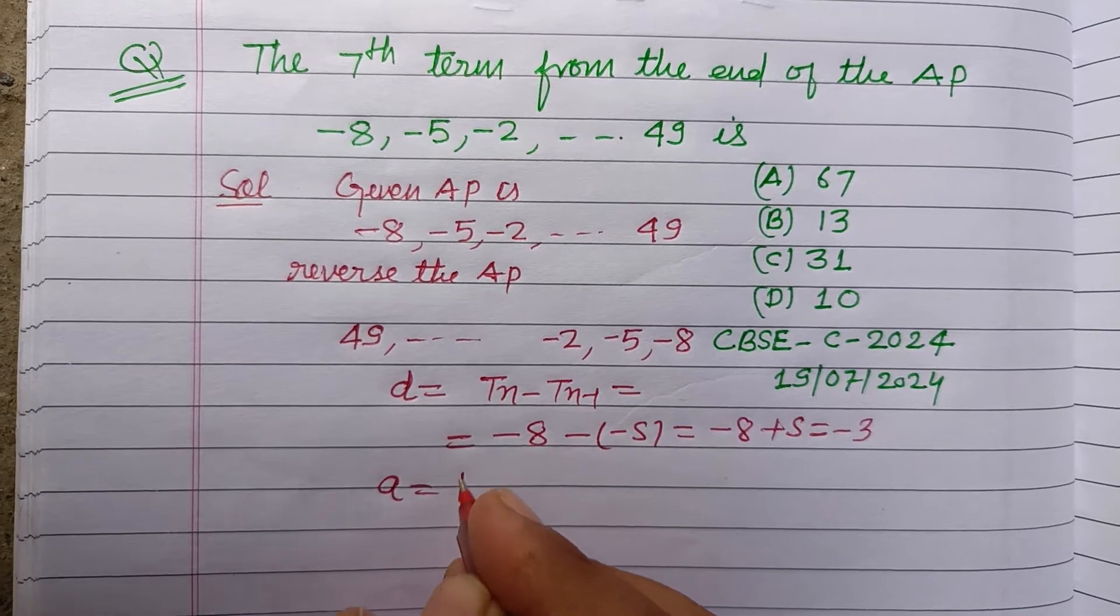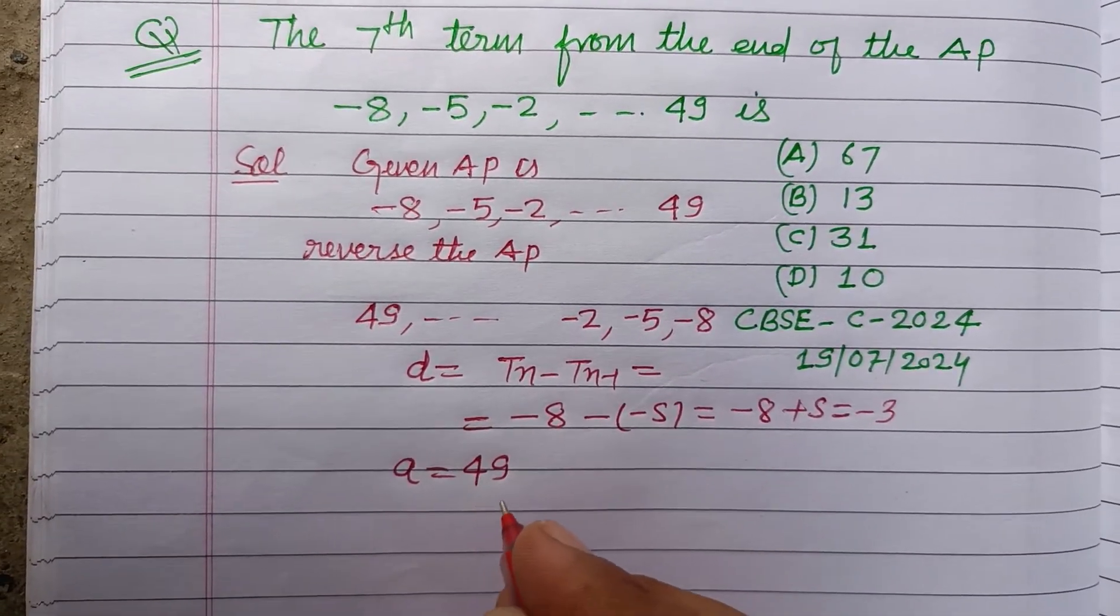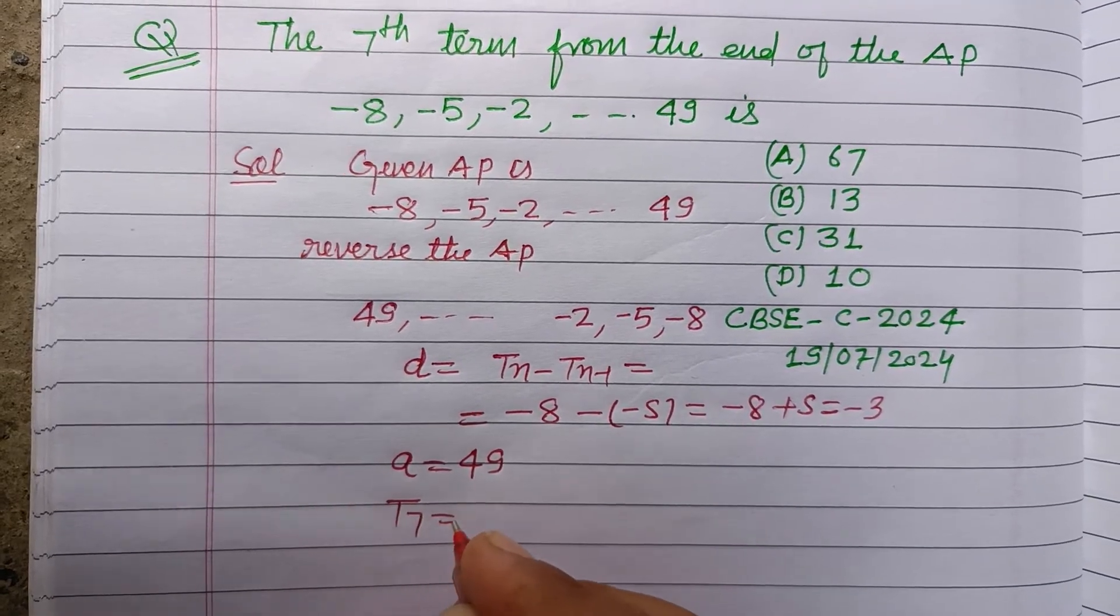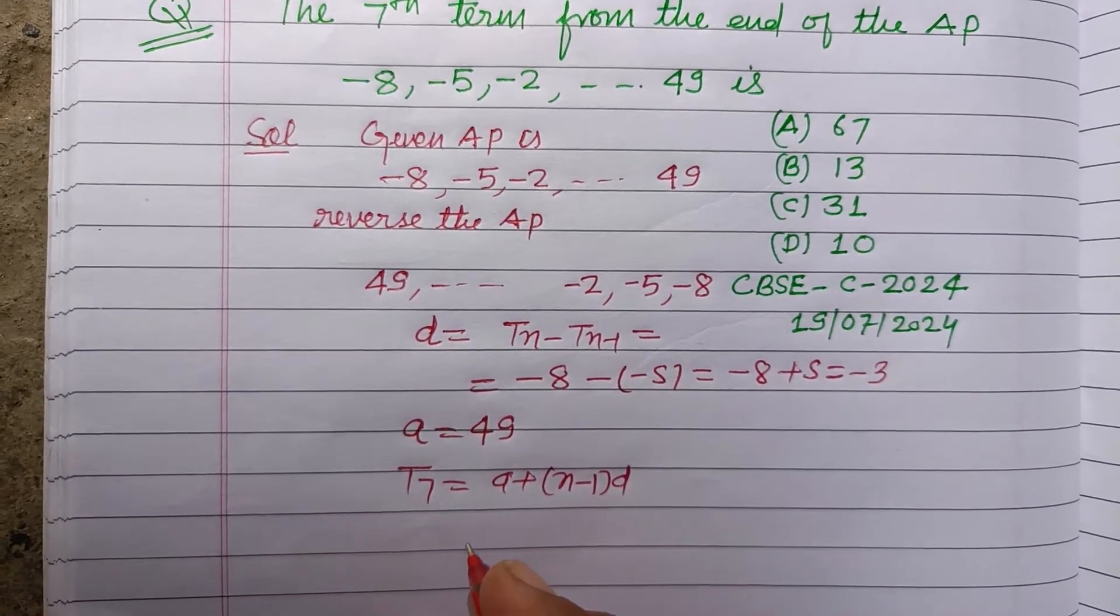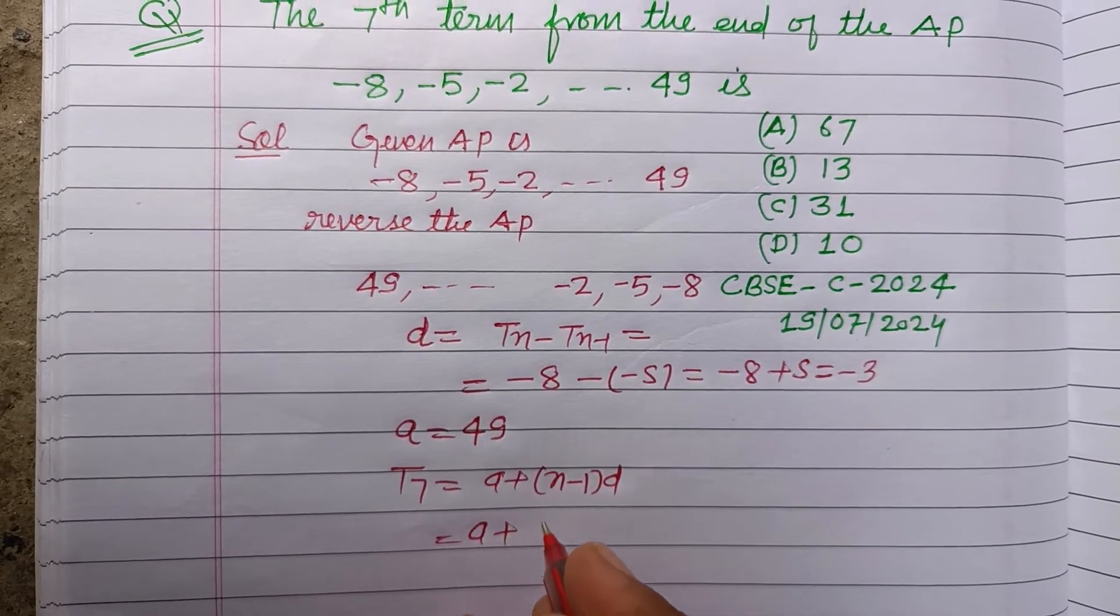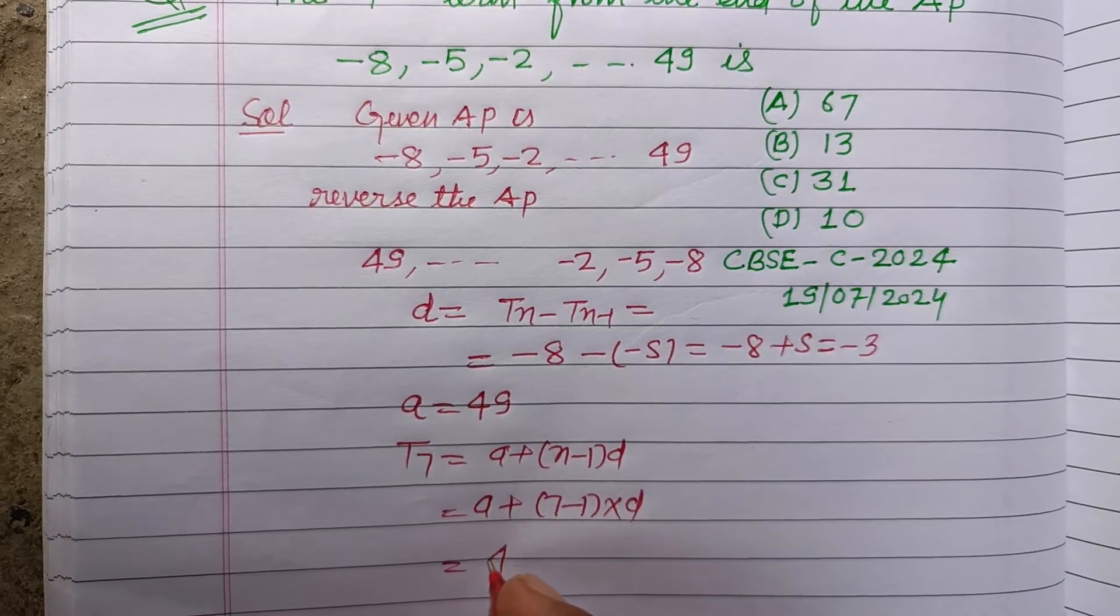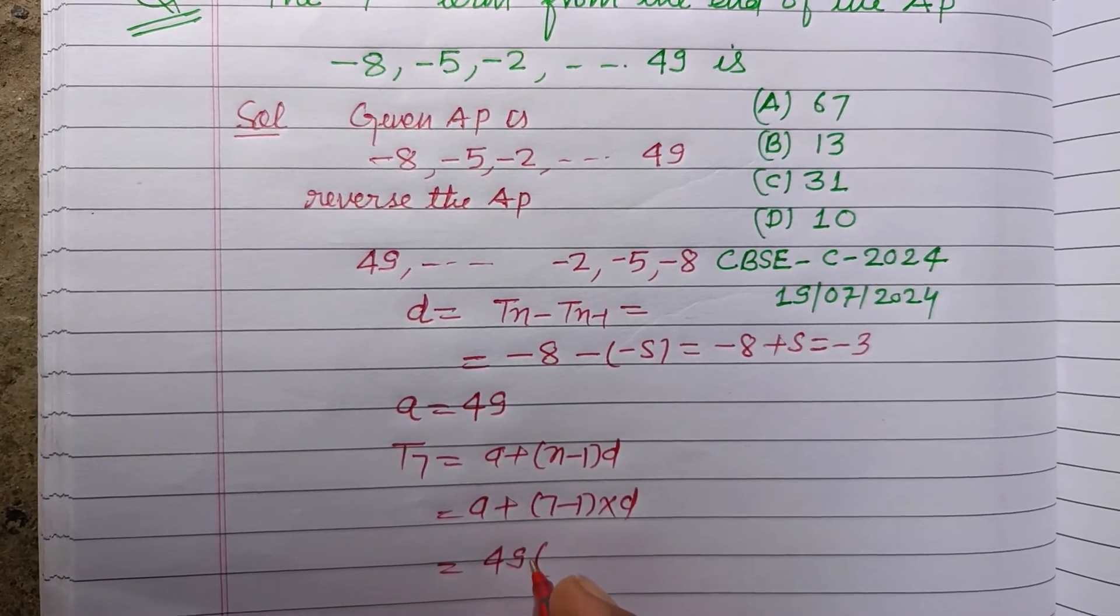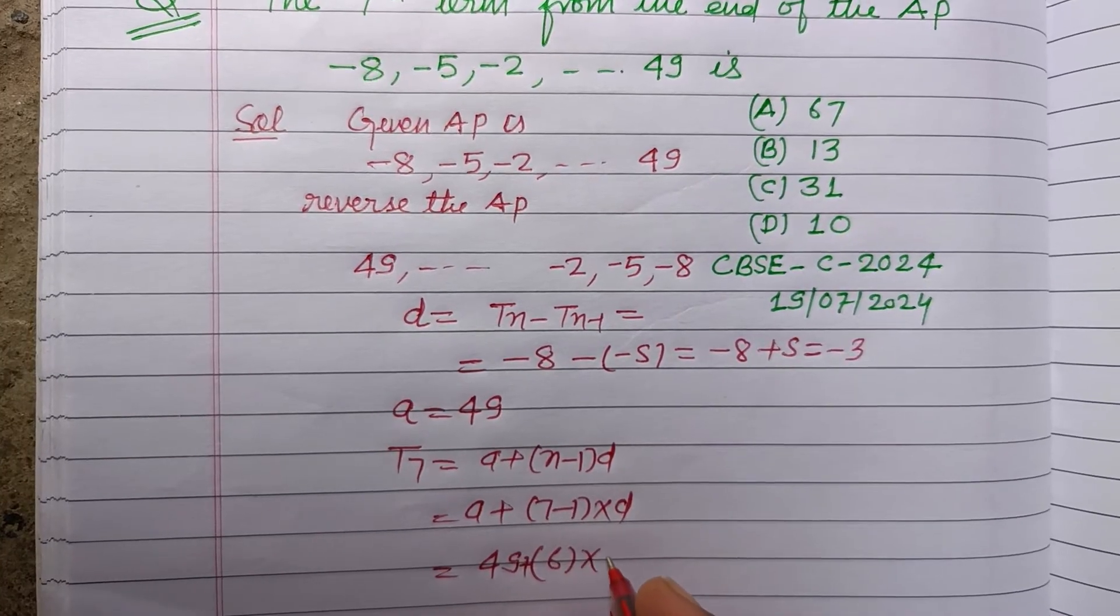A is 49 and we want to find the 7th term. So T7 equals A plus N minus 1 into D. So A plus 7 minus 1 into D. A is 49 plus 6 into D. D is minus 3.